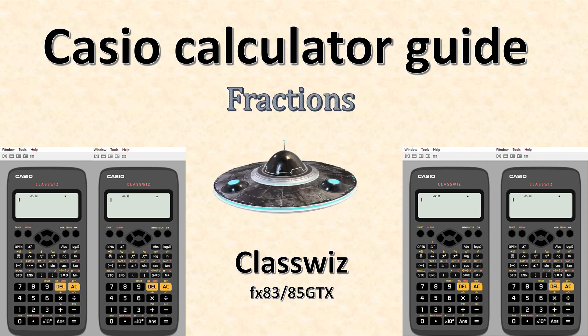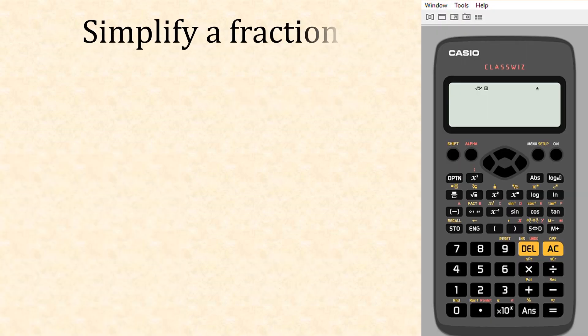Casio calculator guide: fractions. We can use the calculator for simplifying fractions. Let's have a look. Let's put in 24, hit the fraction button, 36. To simplify that, we just press equals and it gives us in its simplest term, two-thirds. Nice and easy. Let's try another one.